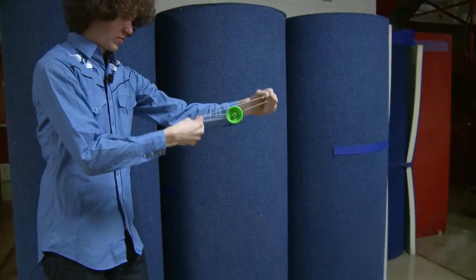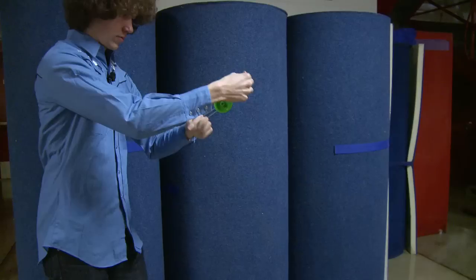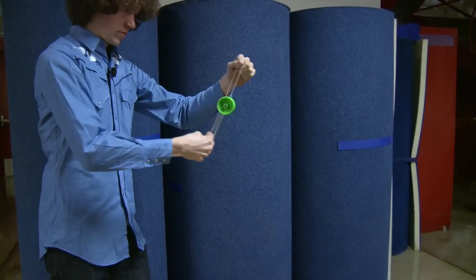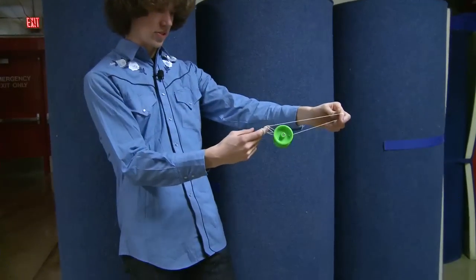And to finish the trick, move your free hand to the front, and release the strings that are on your throw hand, causing the yoyo to drop out.